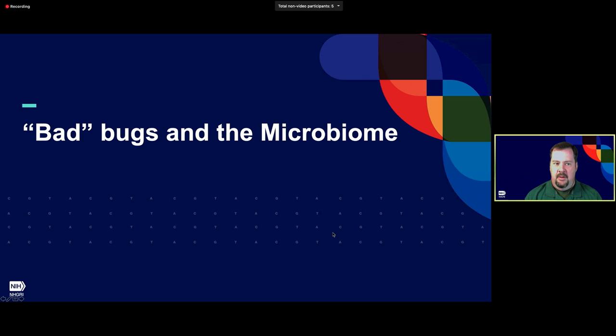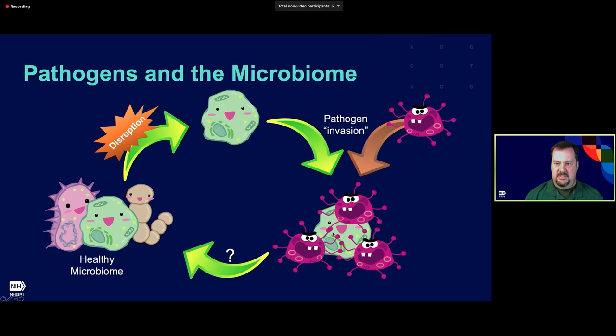The last part of my talk is on bad bugs in the microbiome. Most bacteria are actually doing good things and are supposed to be there, but clearly there are cases where our normal microbiome can be invaded by a pathogen causing disease. There is this idea in the microbiome world that microbiomes can become dysbiotic — they don't look like they should — and that this makes them more vulnerable to invasion by pathogens. One place where people are really interested in that is in stem cell transplants.